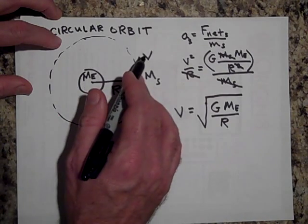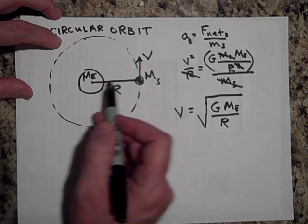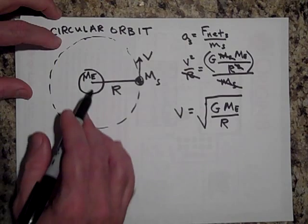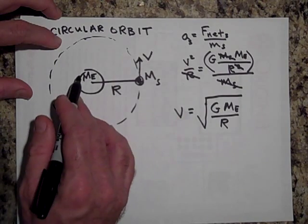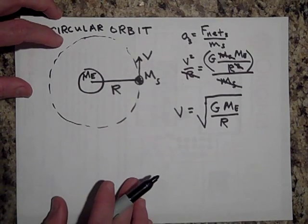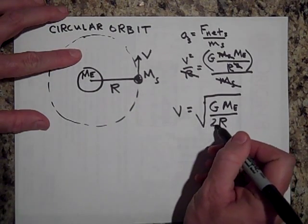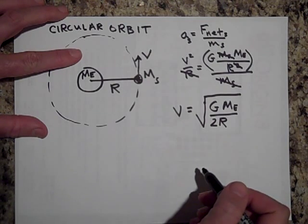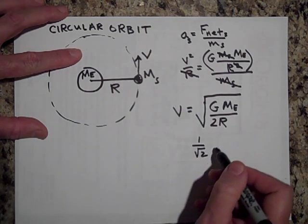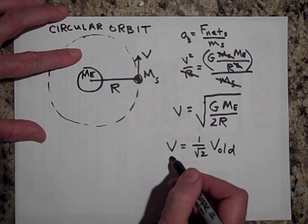What if we go twice as far out, keeping the mass of the Earth the same? What is the new velocity? Go ahead and pause. If you put a 2 in the denominator under the radical, pulling that out gives one over the square root of two times the old velocity. That's the new velocity needed when you're twice as far out.